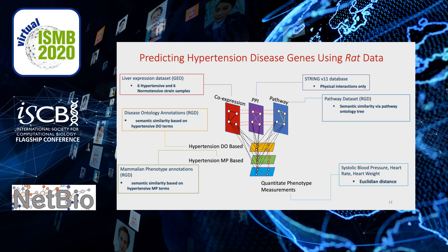We generated quantitative phenotype measurement-based strain similarity using systolic blood pressure, heart rate, and weight measurements of strains at RGD. Finally, we connected the gene and phenotype multiplex networks using mammalian phenotype annotations of genes and strains at RGD.